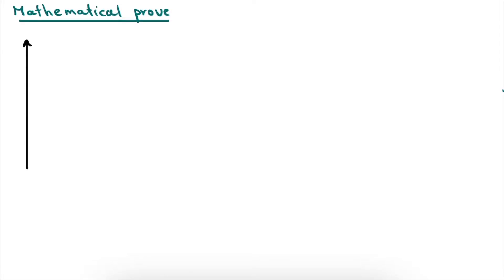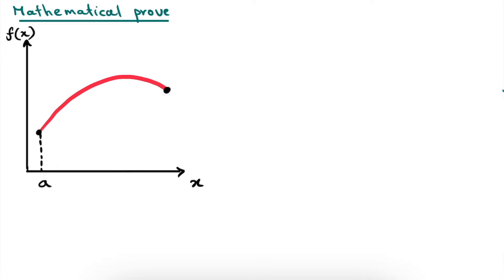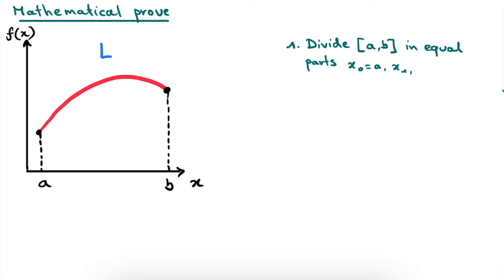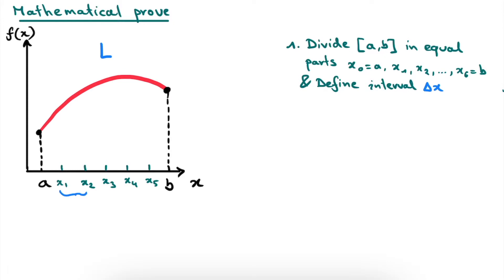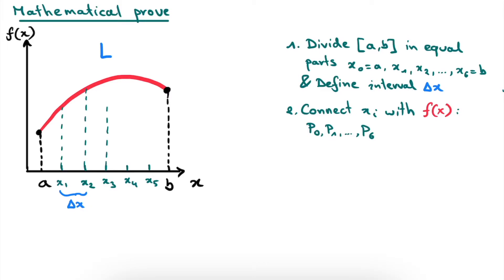To set things up, let's draw a piece of smooth function of which we want to calculate the arc length L, bounded by the points a and b. The first step in our proof is to divide the piece of the x-axis between a and b into equal parts. a will be x0 and b will be x6. Because all of these points are equally spaced, the interval between two points will always be the same, and this interval we define as delta x — which is x2 minus x1, or x3 minus x2, and so on. In the second step, we connect each point xi with the graph representing f of x by a horizontal line, and each corresponding point we call pi.